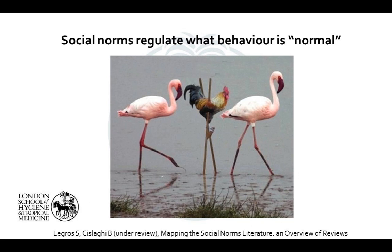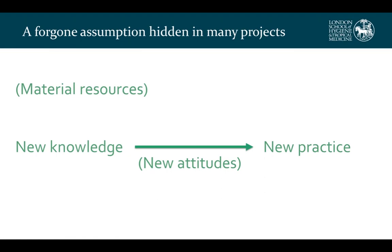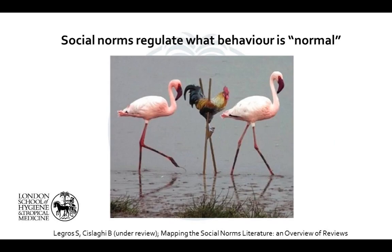Social norms theory is extremely multifaceted, with different and sometimes contrasting theories, because the social norms construct is as old as the history of philosophy — you find reference to it in Aristotle, Grotius, Hume, Kant, and so on. Reduced to one concept, social norms are unwritten rules of behaviour that regulate what actions are considered normal.